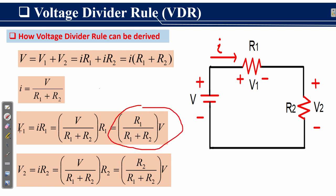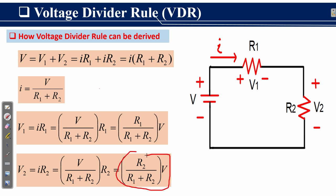This is the voltage divider rule — the voltage drop across R1 is R1 over R1 plus R2, times the applied voltage V. Similarly, V2 equals I times R2. Substituting I gives V2 equals V over R1 plus R2, times R2, which equals R2 over R1 plus R2, times V. This confirms that using a single formula you can find the voltage drop across any resistor in a series combination of n resistors.